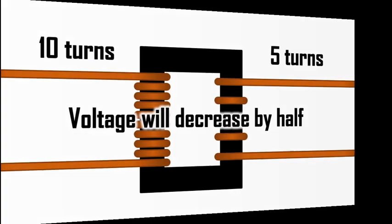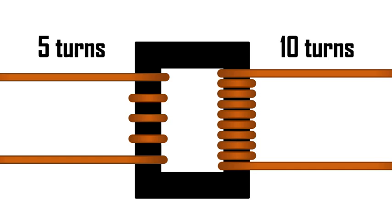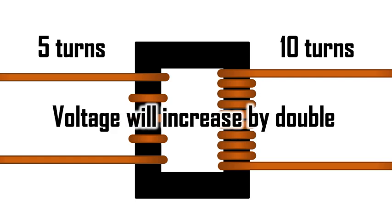If we reverse the turns ratio, the opposite is going to happen. On this transformer, the primary side has only 5 turns and the secondary side has 10 turns. There are twice as many turns on the secondary side, so the voltage will increase by double. This is a step-up transformer because the voltage increases.